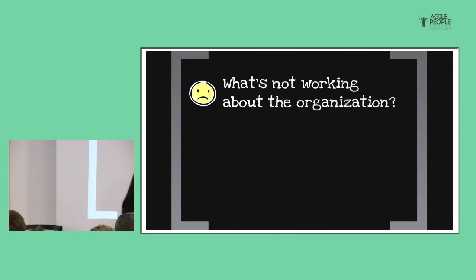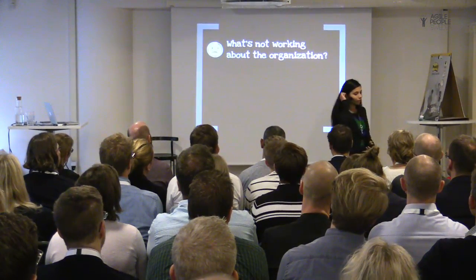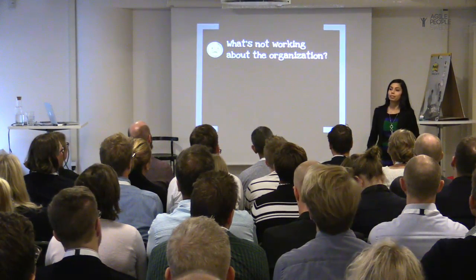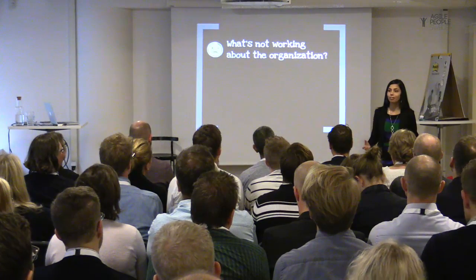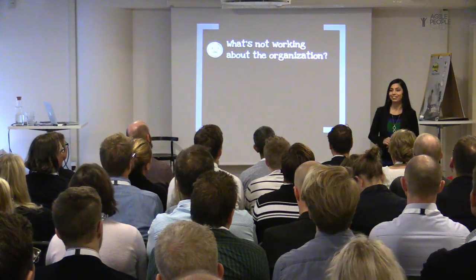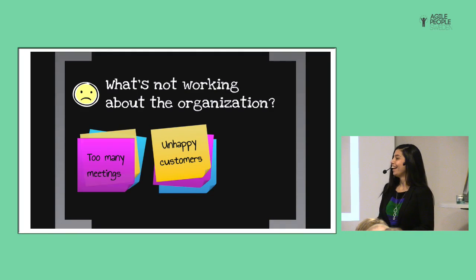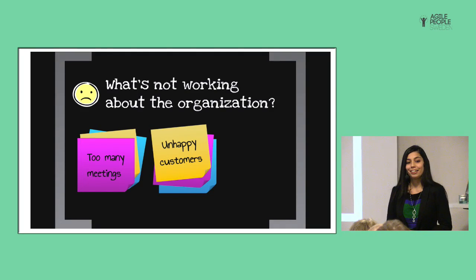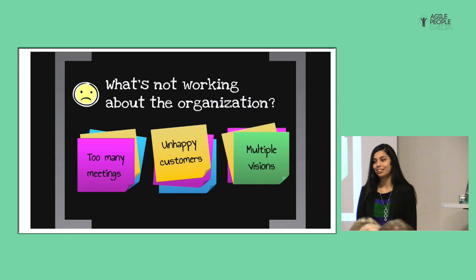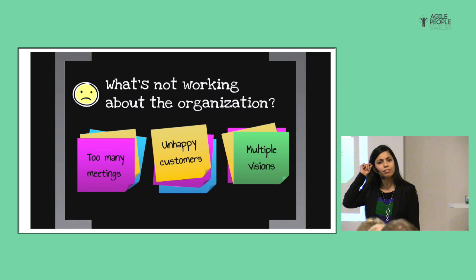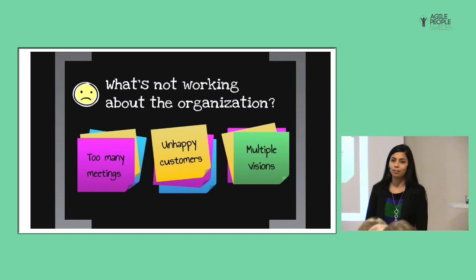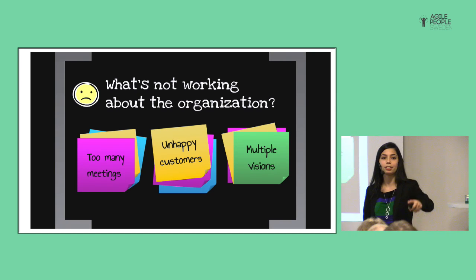What was not working in the organization, as described by the leaders and team members when I was introduced to this assignment: we have unhappy customers, we have too many meetings, and we have multiple visions. Usually that is described as 'we don't have a vision for the product,' but what it means is: I have a vision, that guy has another vision, this guy has yet another vision — and they don't necessarily align.